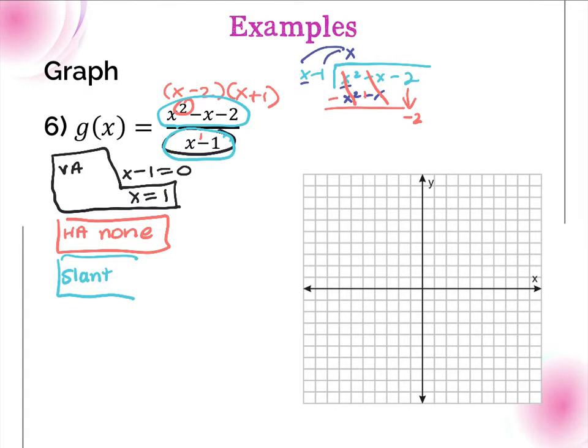For slant, we completely ignore the remainder, and we only grab the quotient. We set it equal to y, and that's my slant asymptote. The remainder, we do not include at all when we find slant.